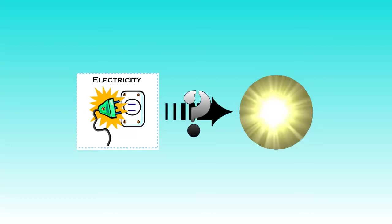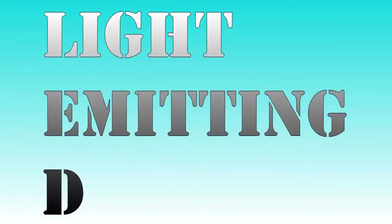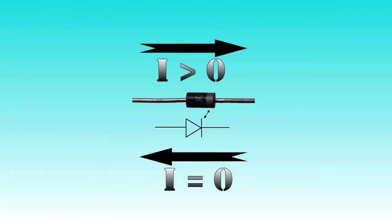But how do they work? LEDs are light emitting diodes. Diodes are electrical components that only permit current to flow in one direction.